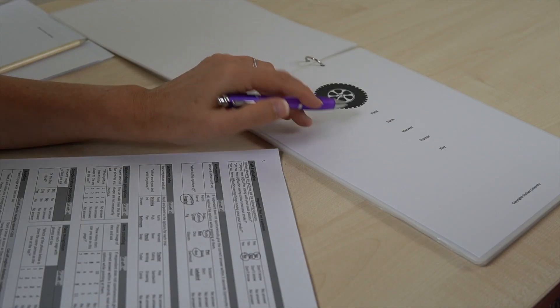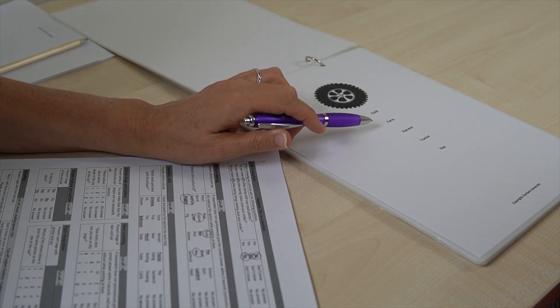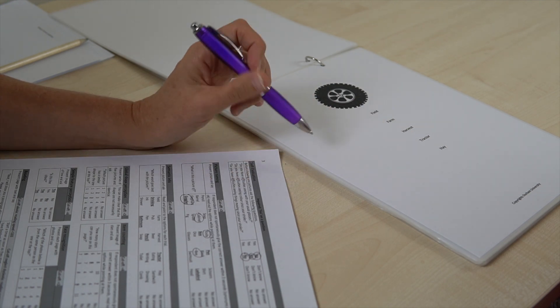In the third task, the semantic information task, we again show patients a picture, but now the question is slightly different. We ask them which of the words goes best with the picture. Again, they get five options and they can just say the word they think is best or they can point to it. If they don't reply within a few seconds, we will read the words out loud to them.